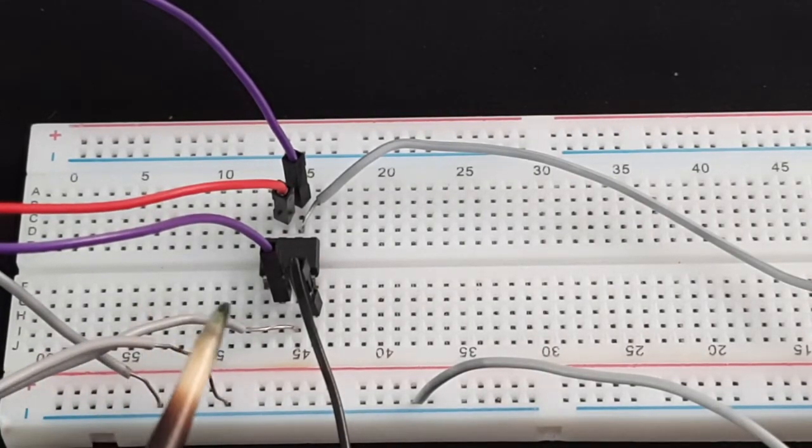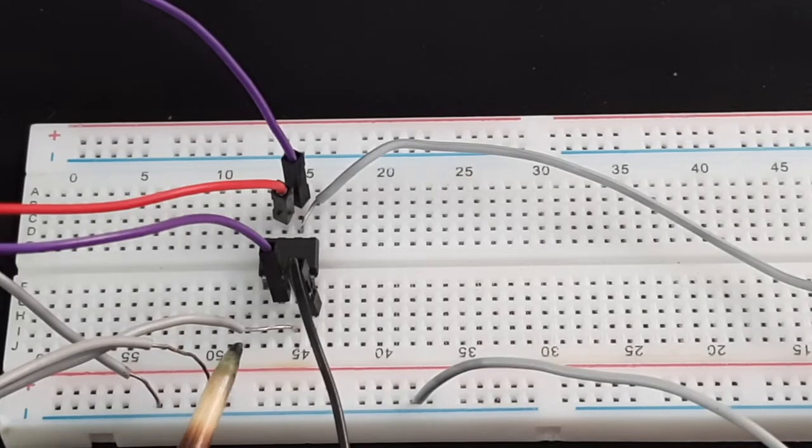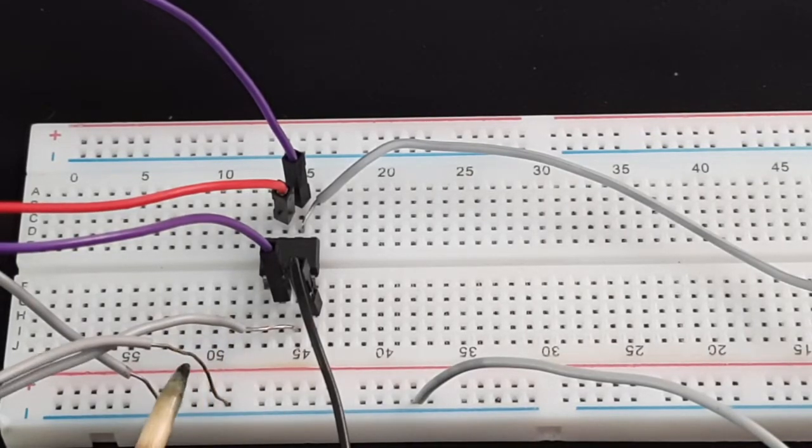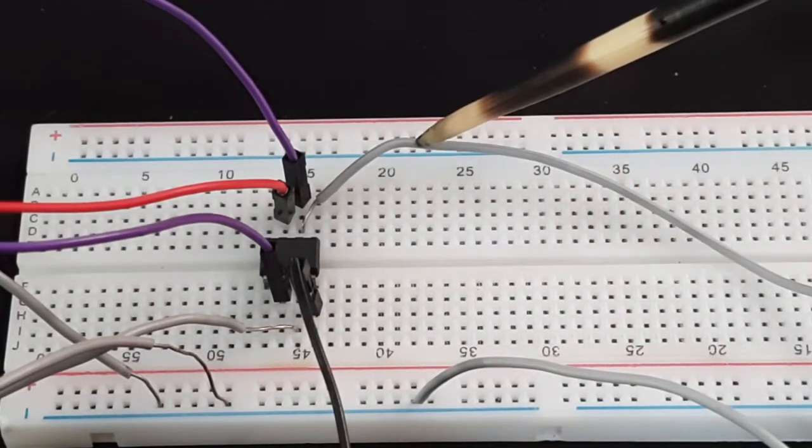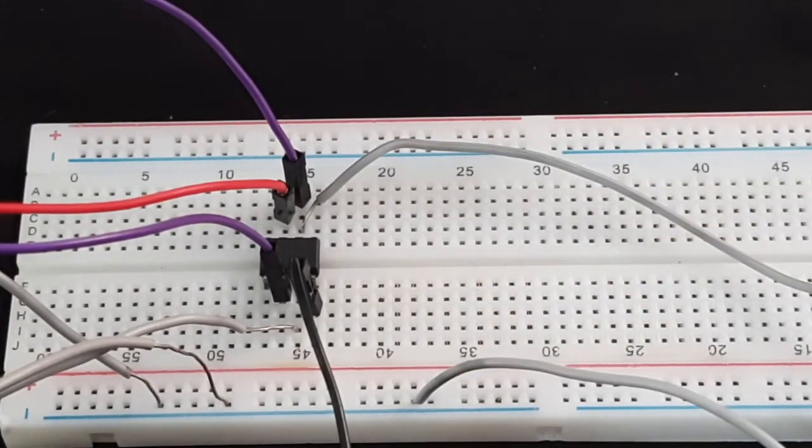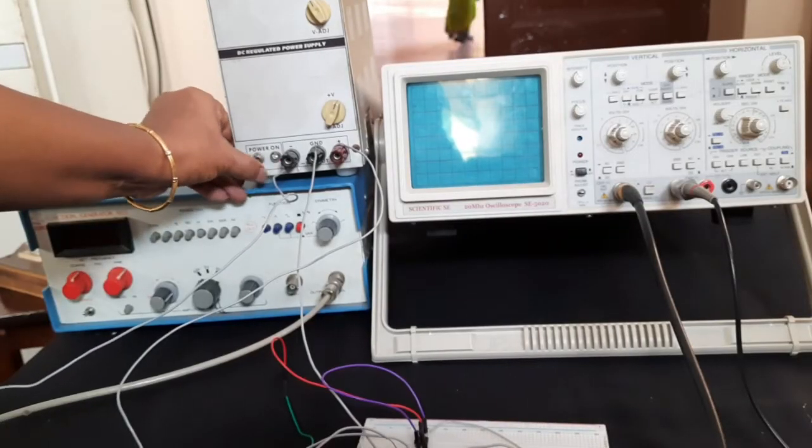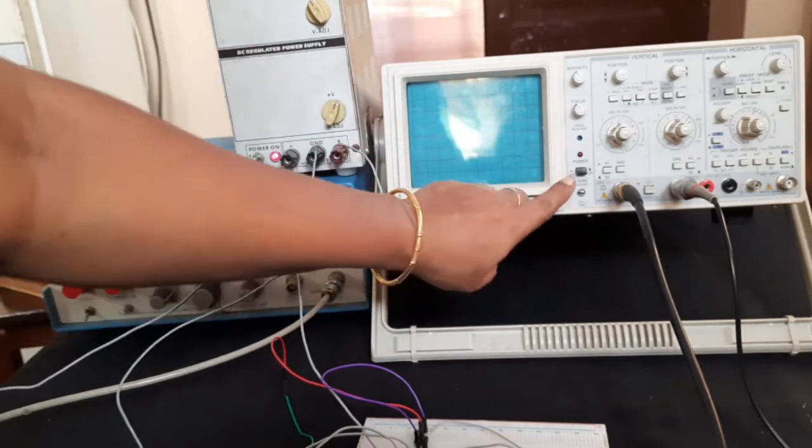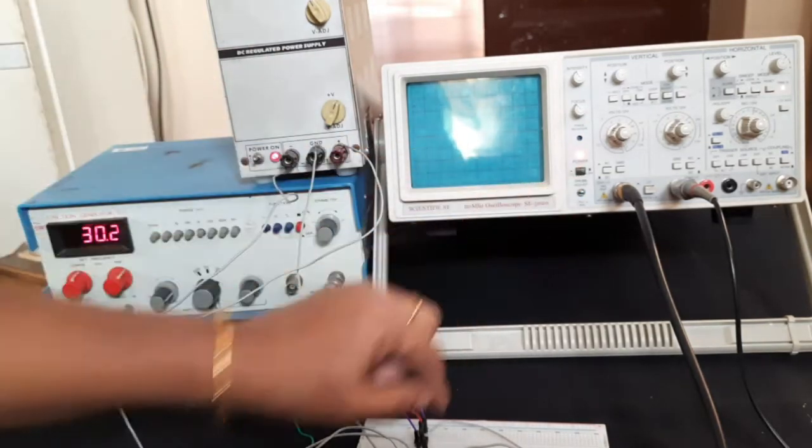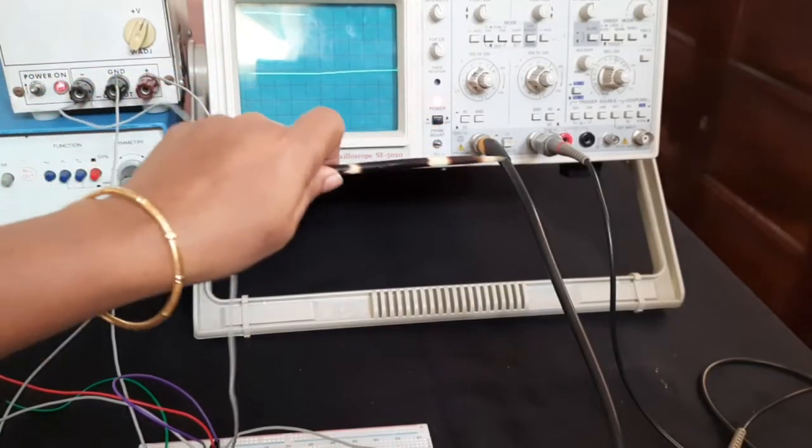These two pins are the input: positive of the input, this is the negative of the input. These two wires for the output: positive of the output, ground of the output. So the circuit is done. Now we will switch on the power supply, switch on the signal generator, switch on the CRO.